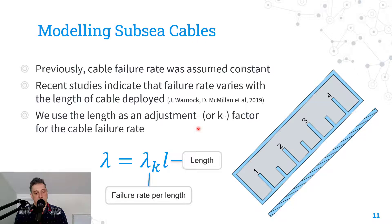What we did is we used adjustment factors or k-factors. That term is normally used for changing a failure rate based on an environment that your component will be in. But here we use the length as an adjustment factor or a k-factor to represent the environmental impact of the cable length.